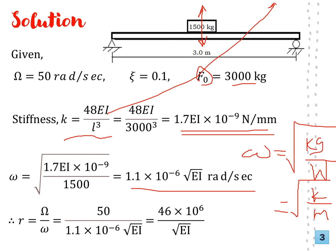So now another thing that we have here is the frequency ratio r, which is the ratio between the forcing frequency over the frequency of our dynamic system. So we are given it's 50 over what we have calculated here, which gives r = 46 × 10⁶/√EI. We express it in terms of EI.